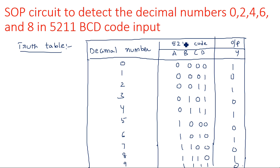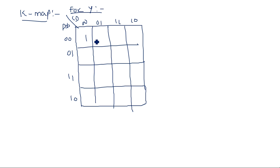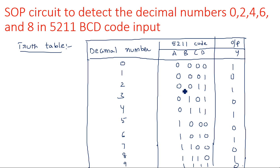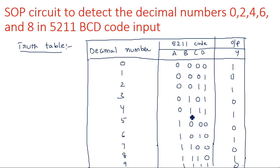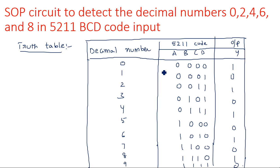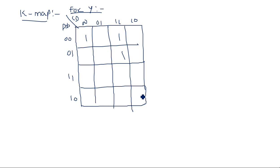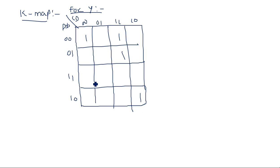In the K-map, 1s are placed where the output is 1. Decimal 0 (0000) gives 1; decimal 2 (0011) gives 1; decimal 4 (0211 coded as 0011) gives 1; decimal 6 (1001 or 1010) gives 1; decimal 8 (1110) gives 1. The K-map entries at positions 0, 2, 4, 6, 7, 8, and 10 are marked accordingly with 1s.